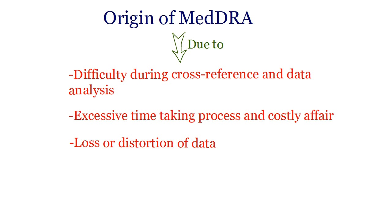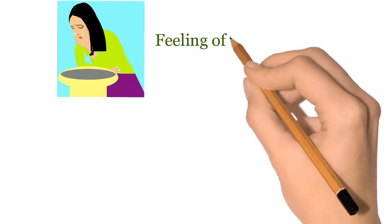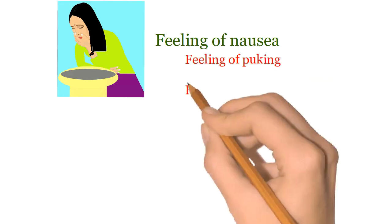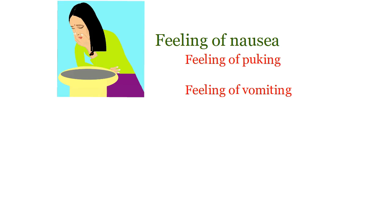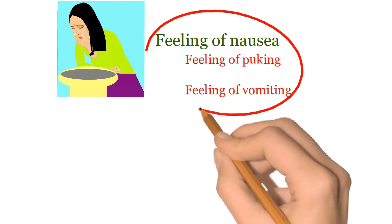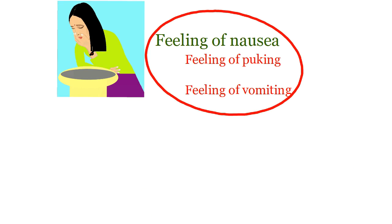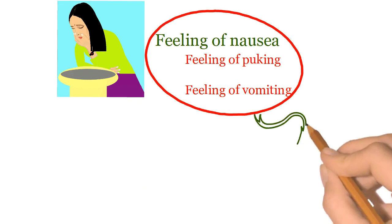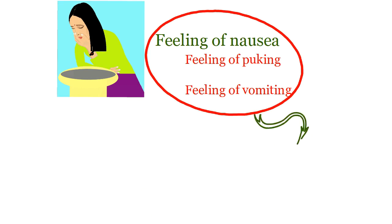There can be many terminologies for the same disease, and people can report adverse effects related to a medicine in different languages. For instance, feeling of nausea can be reported as feeling of puking or feeling of vomiting. These different terms for the same disease can create confusion and duplication of the same adverse effect report, and there are chances of losing exact data when translated from one language to another.